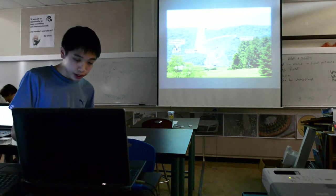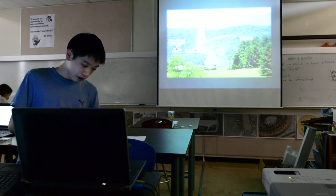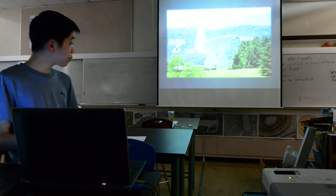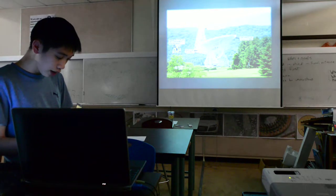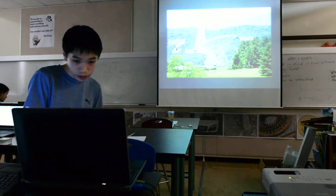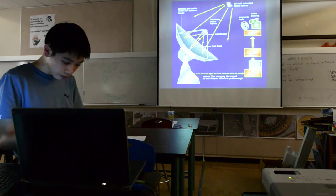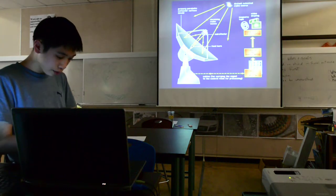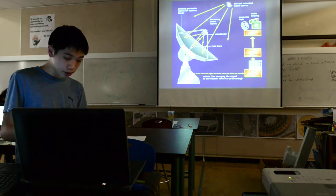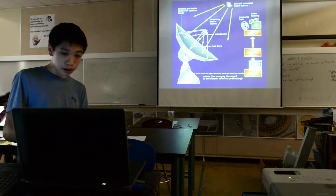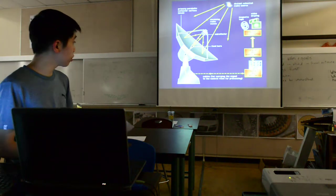Radio telescopes must be very big to collect the radio waves and focus them onto a receiver and amplifier, where a computer will then translate them into images, which are displayed in the observatory or in the lab.